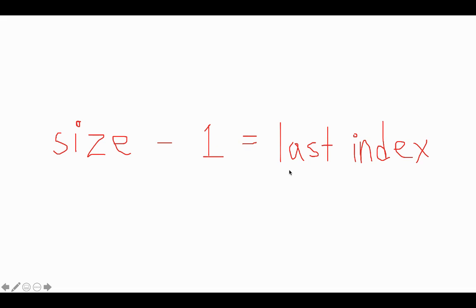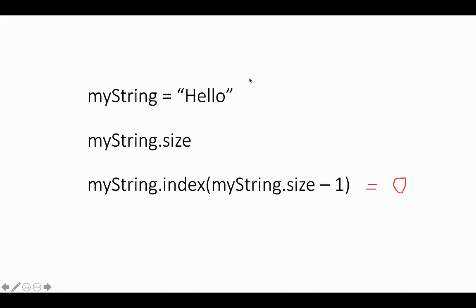So let's look at some pseudocode. If we have a variable called myString and we set it equal to hello, the string hello, then myString.size - this is the size of the string which we know to be 5. And so if we want to get the last index, which is an O, we need to just access the index at myString.size minus 1.